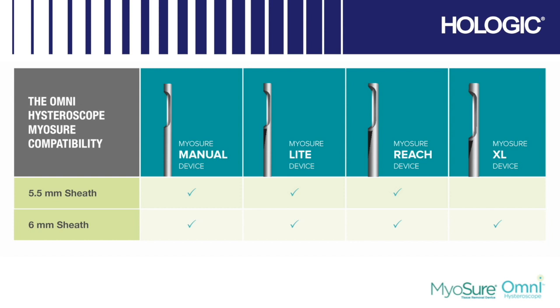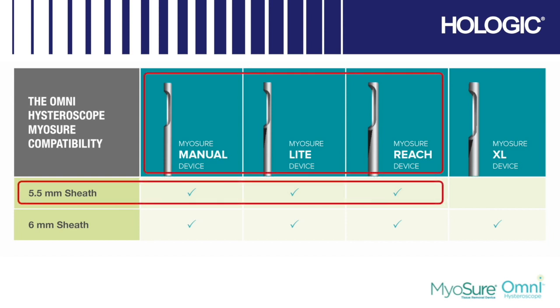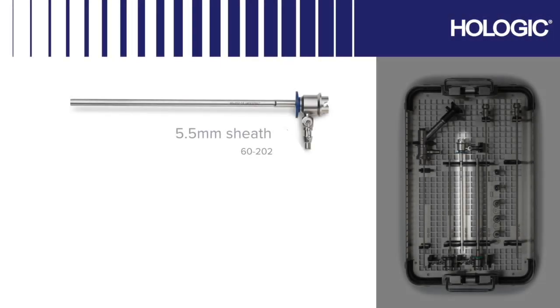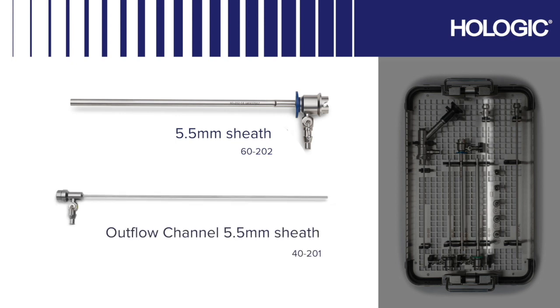Depending on the MyaSure handpiece selected by the clinician, you will now select the appropriate operative sheath. For use with either MyaSure manual, light or reach handpieces, select the blue 5.5mm sheath indicated 60-202 on the tray and the non-colored outflow indicated 40-201 on the tray.